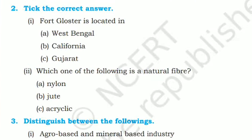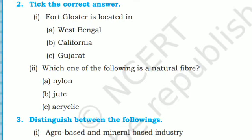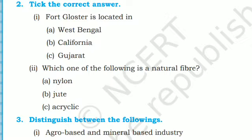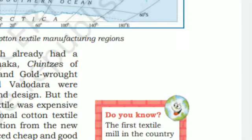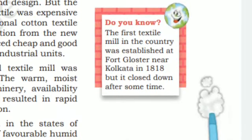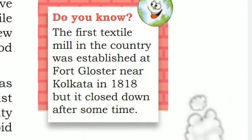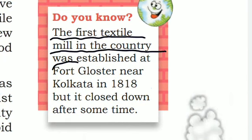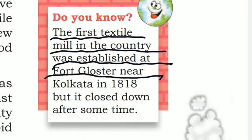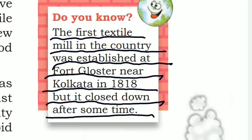The first textile mill in the country was established at Fort Gloucester near Kolkata in 1818, but it closed down after some time. Jute is a natural fiber.